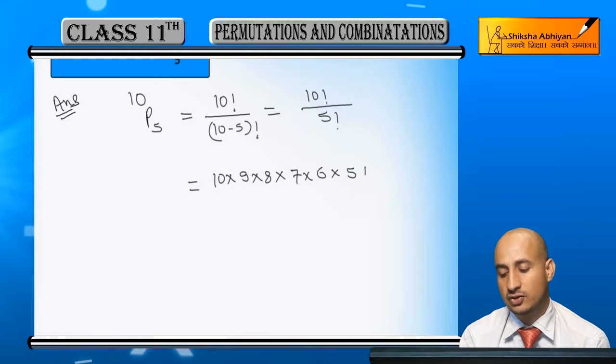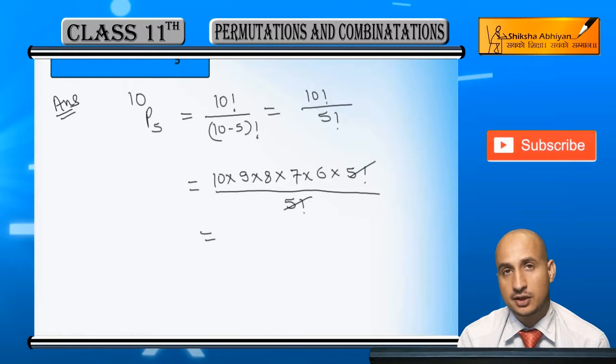When you stop by 5, you will find 5 factorial because the denominator is 5 factorial. This will cancel out. Now simple calculation.